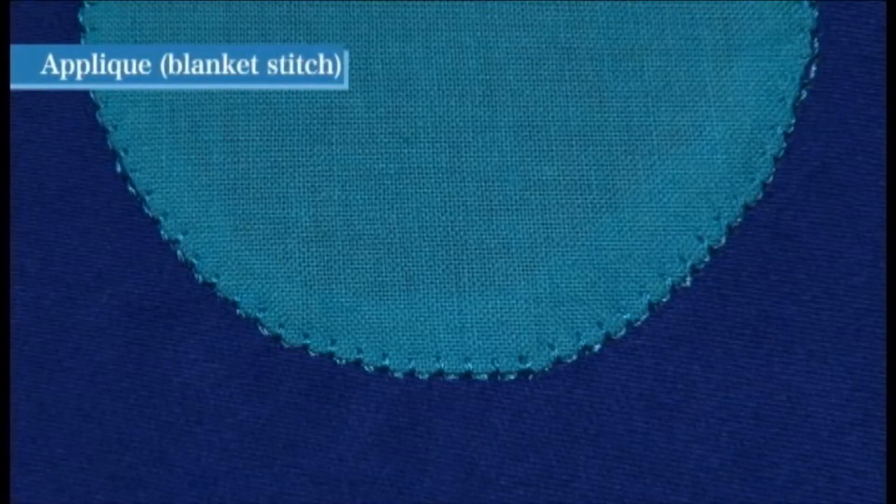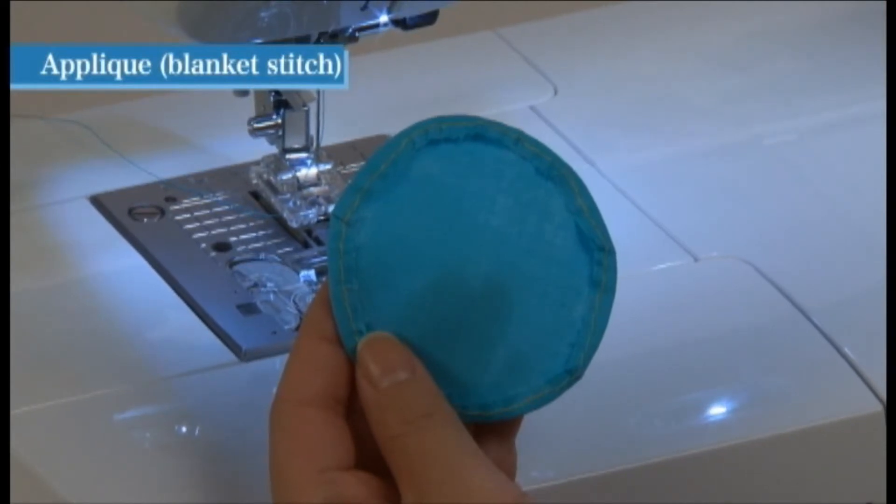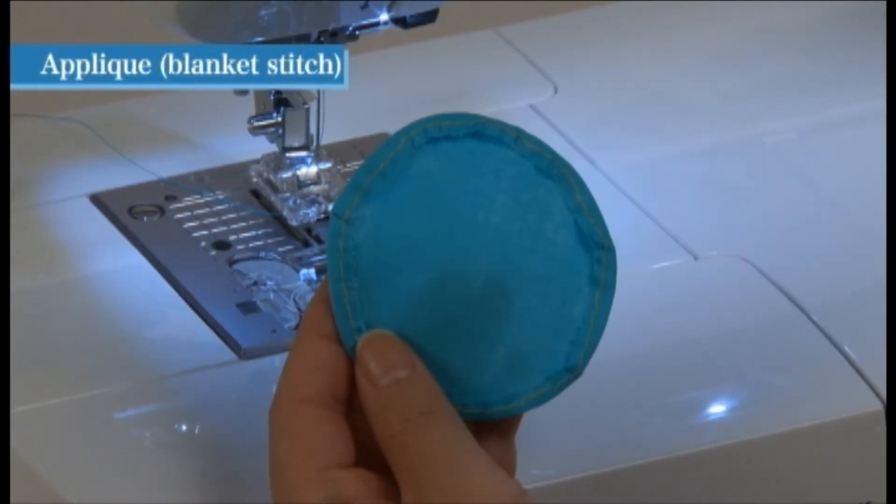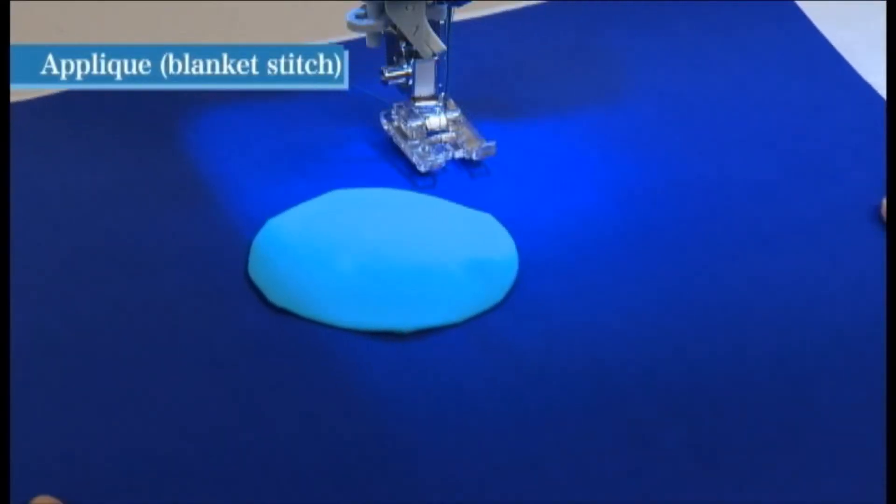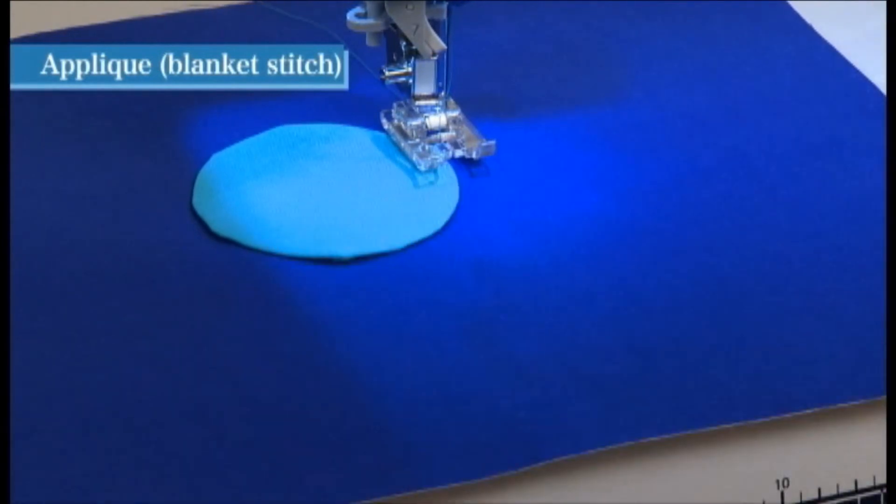An applique can be sewn with inconspicuous stitching. Cut the applique fabric with a seam allowance of three to five millimeters. Place the pattern paper on the wrong side of the fabric and fold back the seam allowance at the finishing lines. Place the applique fabric onto the base fabric and fix temporarily with basting stitches or glue.